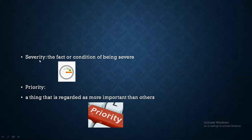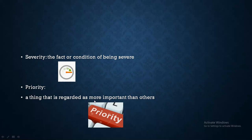To summarize: Severity is the fact or condition of being severe — how much a defect impacts execution activities. Priority means which item is regarded as more important than others — which defect needs to be solved first. Severity tells us how severe the impact is on execution; priority tells us how important it is. Thank you, please subscribe to my channel.